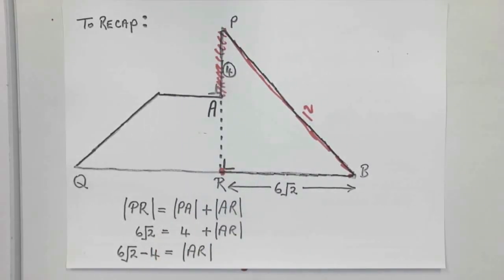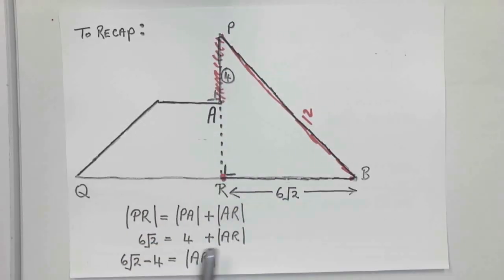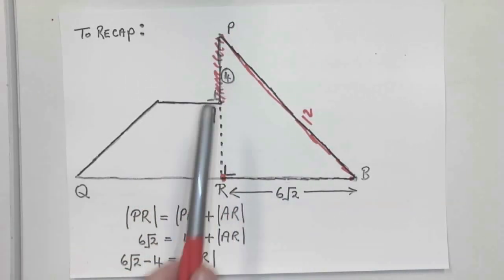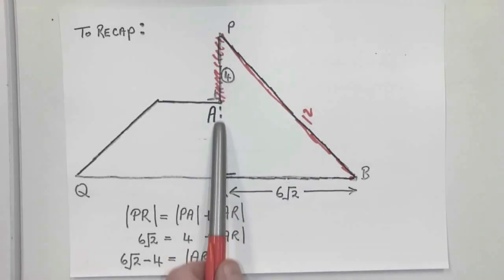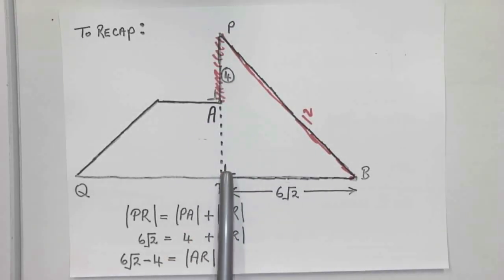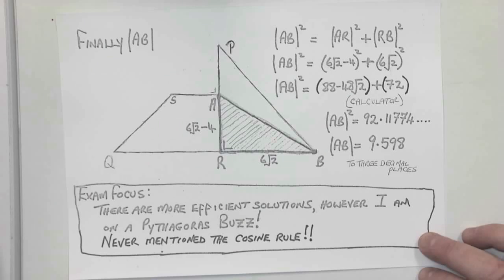So PR is that distance, which is 6 root 2, we've just found it on the last page. PA is 4, we found that like two years ago when we started this question. And then AR is this bit here. What's Brendan doing? I don't really know, but I'm going along with him for a minute. So 6 root 2 is the whole thing equal to 4, which is this bit, plus AR. So if you subtract 4 from both sides now, you'll know what AR is. AR is a rather horrible length, 6 root 2 take away 4. And now I can finally say to you, I am ready.